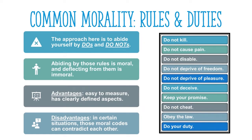From there, another approach was developed called the rules and duties approach. In moral decision making, people become bound by rules and duties. Following this approach requires you to align yourself with do's and don'ts and hold them in a strict fashion. The idea is simple: follow the rules and you are moral; stray from them and you are immoral. Unlike the virtues approach, the rules and duties approach is easy to measure due to having clearly defined aspects and boundaries. Yet on the other hand, a series of rules may contradict each other in certain situations.